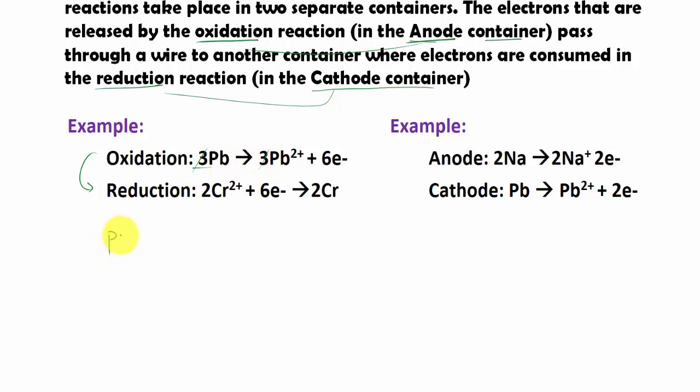So we have Pb, which is just solid, separated by the vertical line, and we have your ions, which is Pb²⁺. Then we are done with the oxidation, and we use this two vertical line to represent the salt bridge.